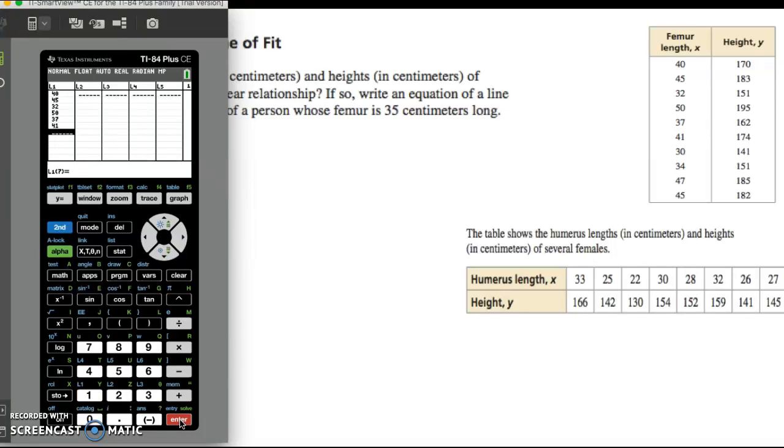Then start entering your x values into list one and your y values into list two. Don't rush this process because you want to make sure that you get all your data points in accurately. You can arrow over to the second list and enter your y values. Be really careful that you match the y values with the corresponding x value that you see in the table of data.